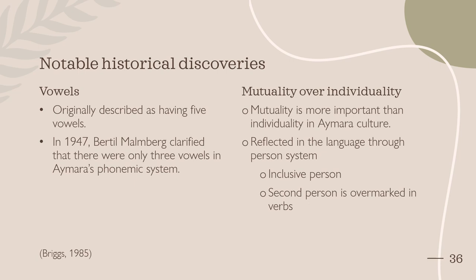Aymara was originally mistakenly described as having five vowels, based on those found in Spanish. This remained the case until 1947, when Bertil Mannberg wrote that there were in fact three vowels in Aymara's phonemic system. Another important aspect of Aymara is that mutuality is seen as more important than individuality, first recorded by an anthropologist named John T. Cole. This is reflected in the language, particularly in the person system. Aymara has a four-person system involving a speaker, addressee, non-locutor, and an inclusive person consisting of the speaker and addressee together. The presence of the inclusive person highlights the importance of mutuality, as well as the fact that the addressee is emphasised by being overmarked in verbs.